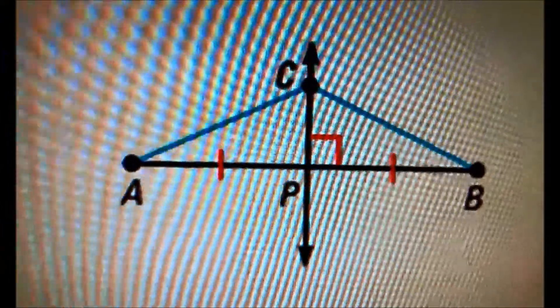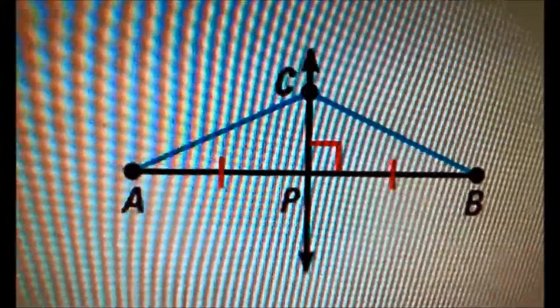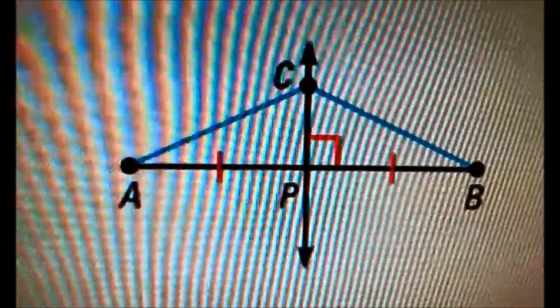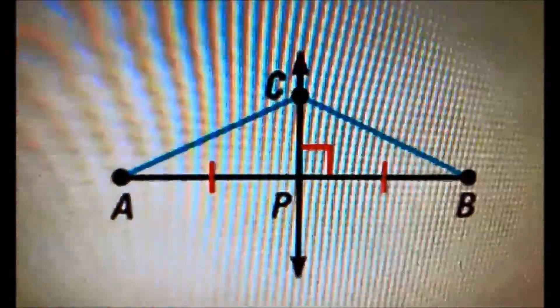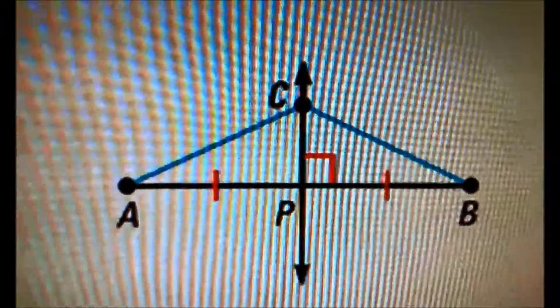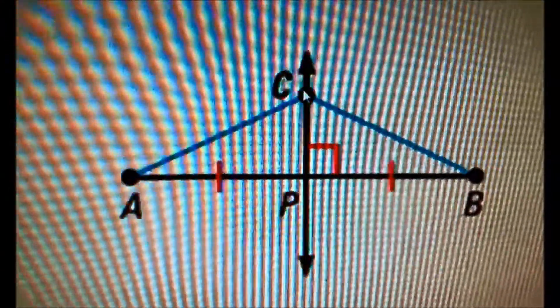We are using this example for Dalen 5.2. Dalen 5.2, in a plane, if a point is on the perpendicular bisector of a segment, then it is an equal distance from the endpoints of the segment. Based on this example, CP is a perpendicular bisector of AB, then CA is equal to CB.